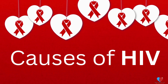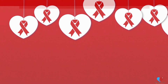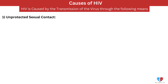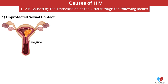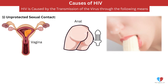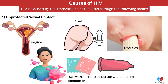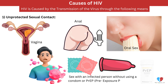Causes of HIV. HIV is caused by the transmission of the virus through the following means. 1. Unprotected sexual contact — vaginal, anal, or oral sex with an infected person without using a condom or PrEP.